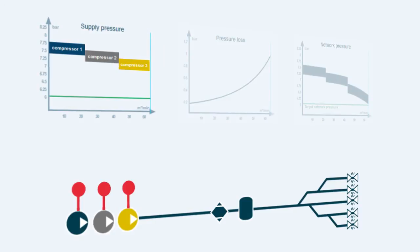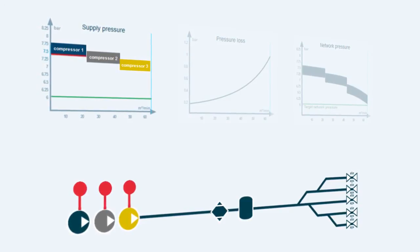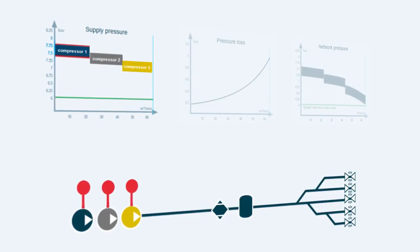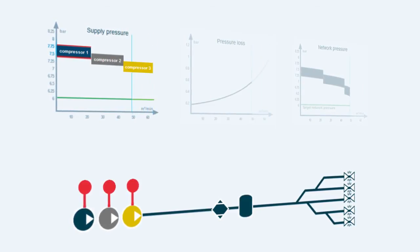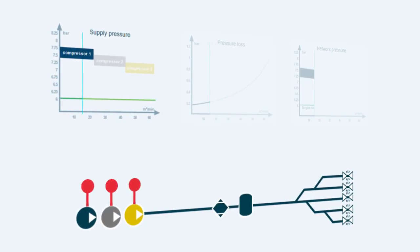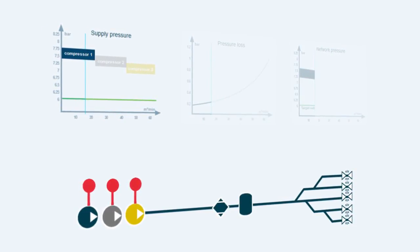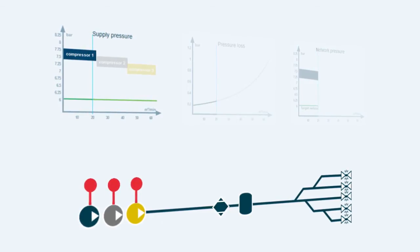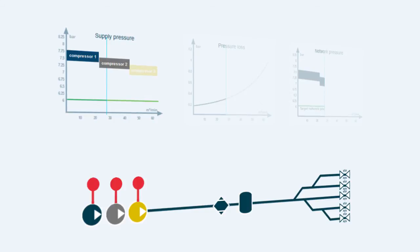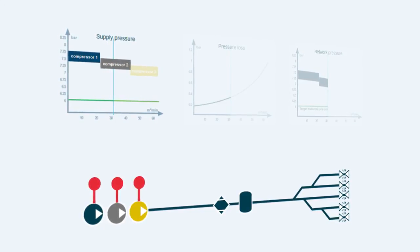Compressor 1, for instance, starts compressing air at 7.5 bar and stops at 7.75 bar. When air consumption is less than the capacity of compressor 1, it can compress the necessary air alone. As air consumption increases, and its capacity is no longer enough to maintain the pressure, the next compressor starts according to its pressure setting.